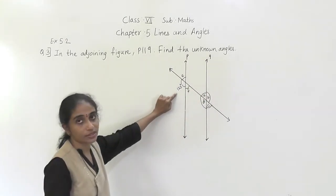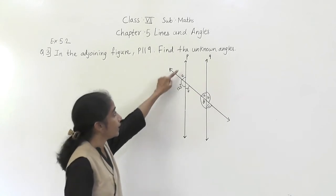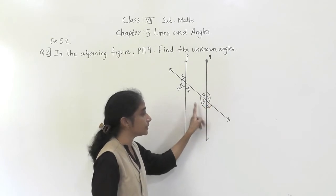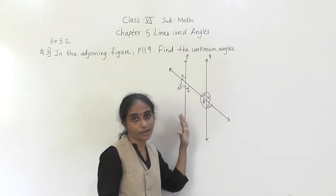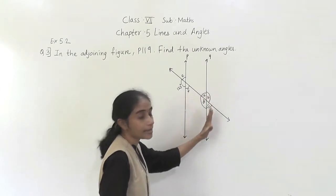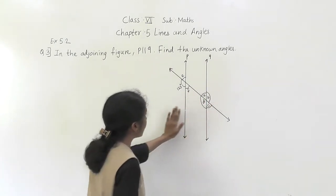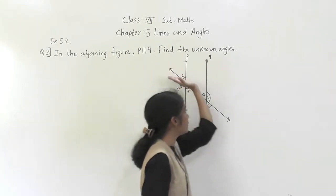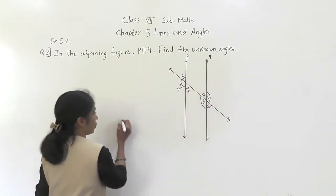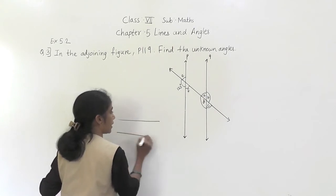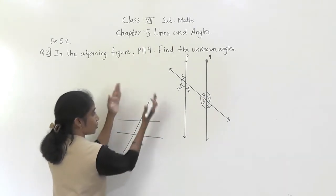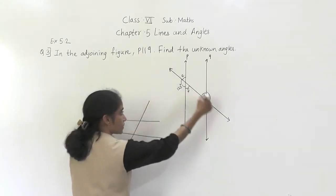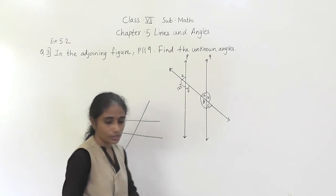Angle 1 equals 125 degrees. This is angle E. We have angles A, B, C, B — these are all the angles we have to find. These are the two parallel lines P and Q, and this is the transversal.